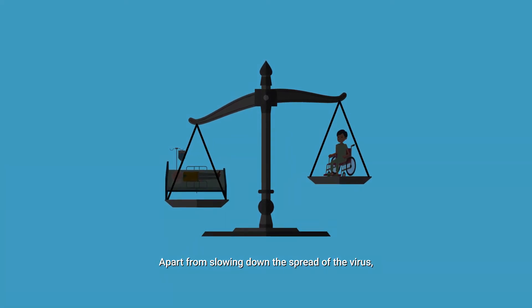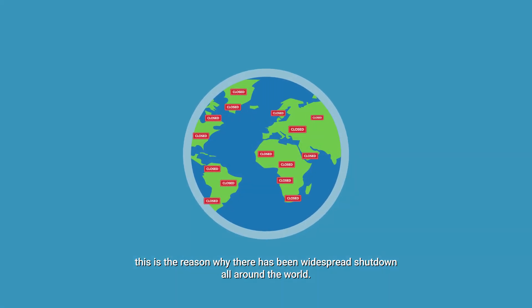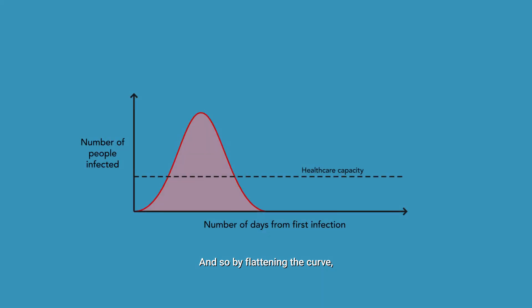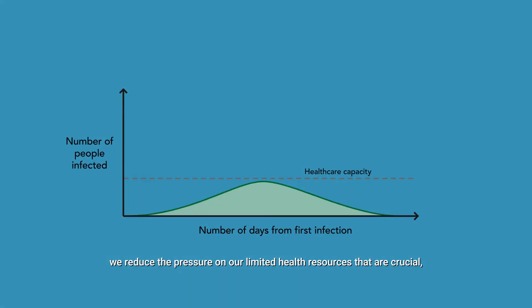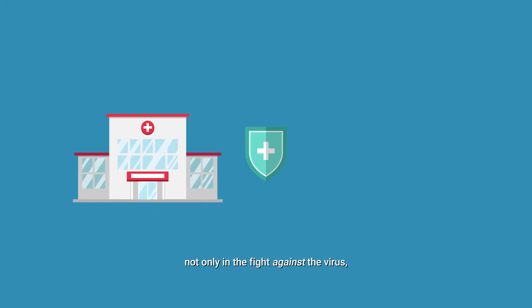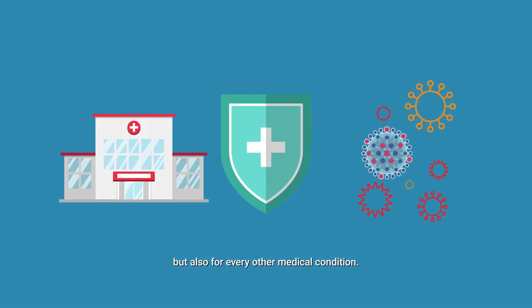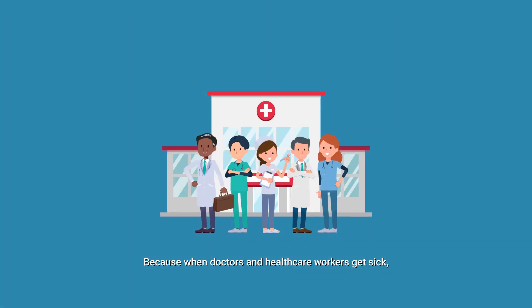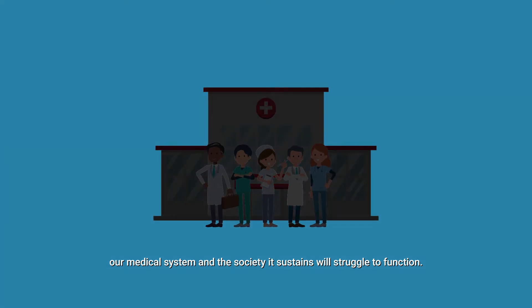Apart from slowing down the spread of the virus, this is the reason why there has been widespread shutdown all around the world. By flattening the curve, we reduce the pressure on our limited health resources that are crucial not only in the fight against the virus, but also for every other medical condition. Because when doctors and healthcare workers get sick, our medical system and the society it sustains will struggle to function.